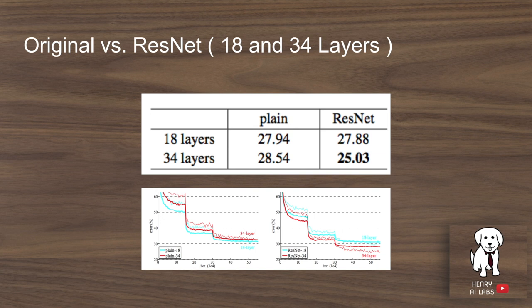The first experimental result shows how the ResNet continues to improve as you go from 18 to 34 layers, while the naive concatenation of convolutional layers is already starting to get worse — for example, dropping from 27.88% to 25% error for ResNet, whereas the plain network's error goes up by almost half a percentage with the increase in layers.